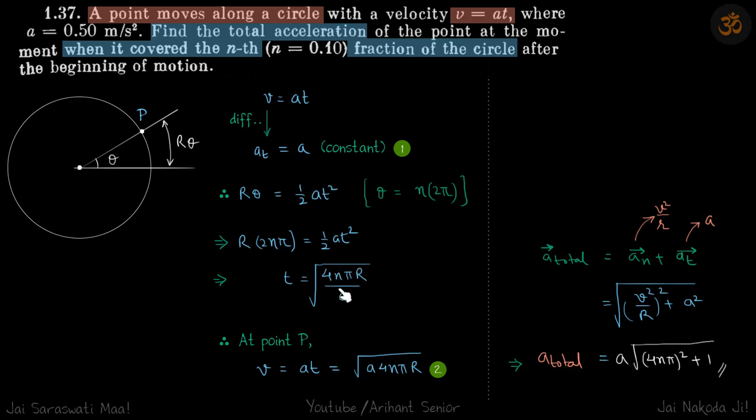Why are we finding time? We have got a_t already, and to find a_normal we need velocity, because a_normal is v² / r and velocity is in terms of time. That's why we are calculating time.